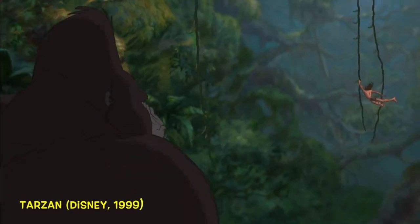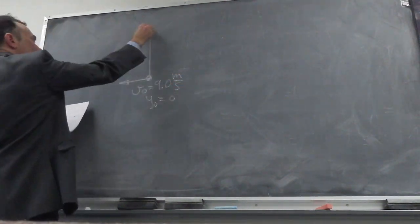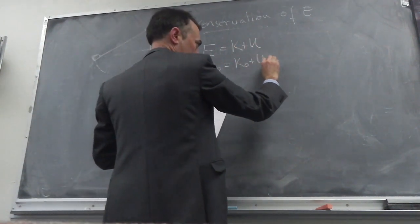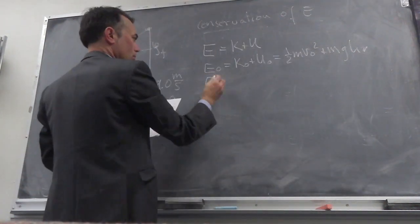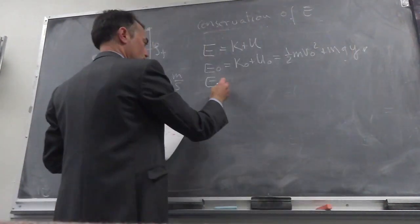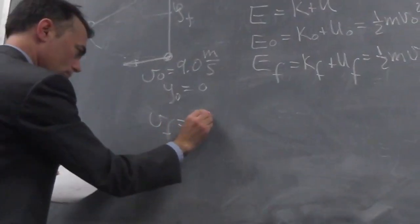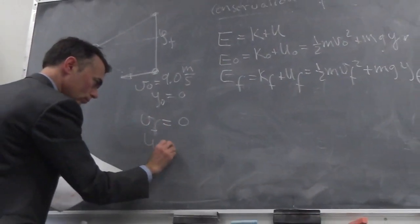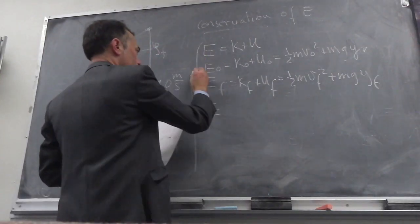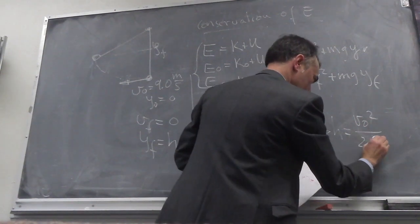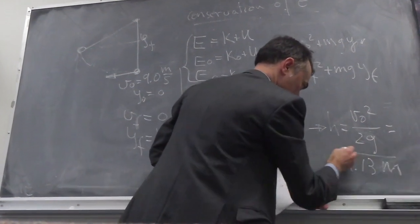Let's do an example of conservation of potential plus kinetic energy. Consider Tarzan, hanging vertically from a tall tree, running at 9 meters per second. How high can he swing upwards? The sum of potential plus kinetic energy is called the mechanical energy. This mechanical energy is conserved in all processes, so the initial mechanical energy equals the final mechanical energy. The initial velocity is 9 m/s, the initial height is zero, the final velocity is zero, and the final height is h. Solving for h gives v² divided by 2g, which equals 4.13 meters.